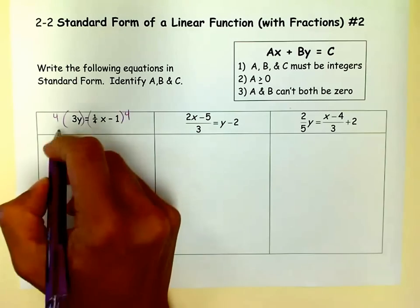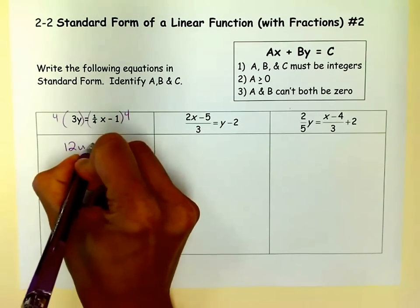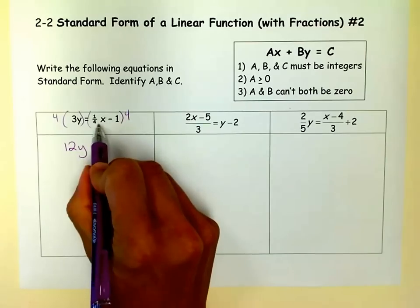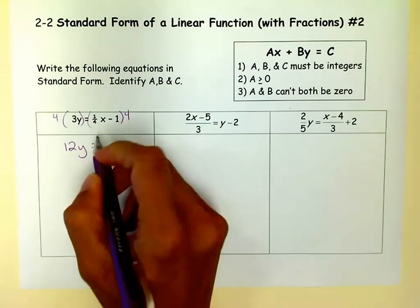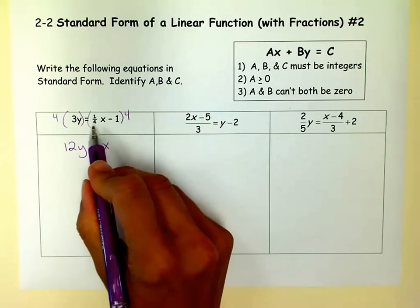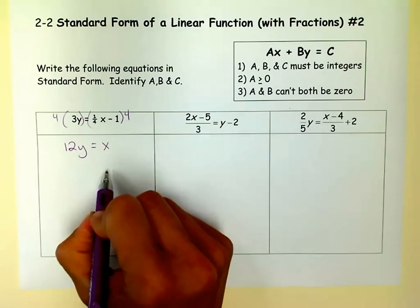So 4 times 3y is 12y. When I multiply this term by 4, 4 times 1 fourth cancels out, so I just have an x. That's the whole reason I picked 4, to cancel out that denominator of 4.